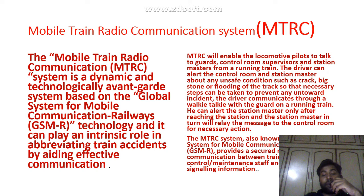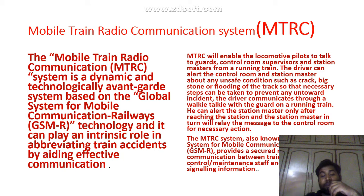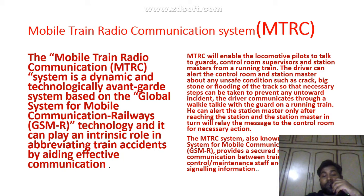Steps can be taken to prevent any untoward incident. Currently, the driver communicates through walkie-talkie with the guard on a running train. He can alert the station master only after reaching the station, and the station master in return will relay the message to the control room for necessary actions.